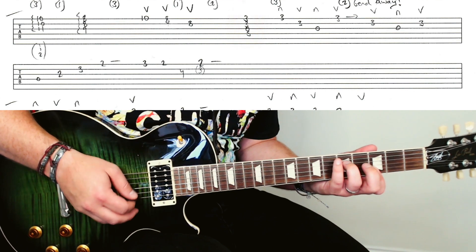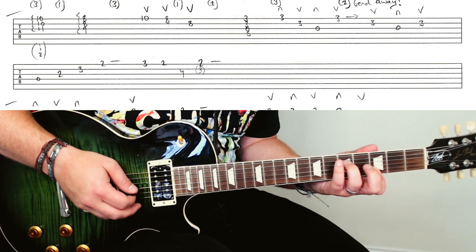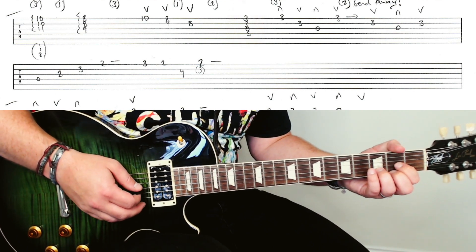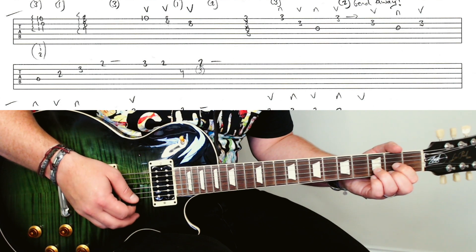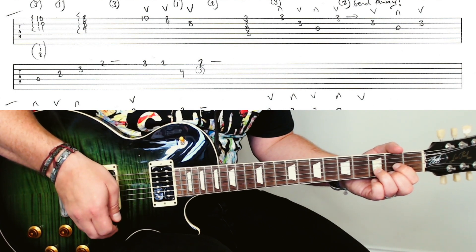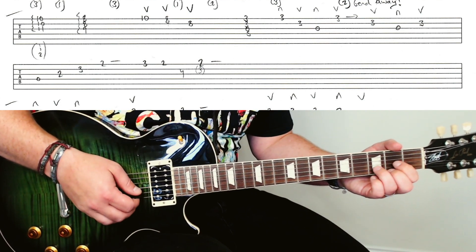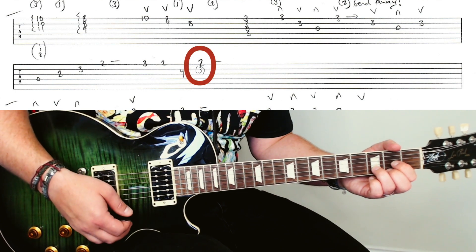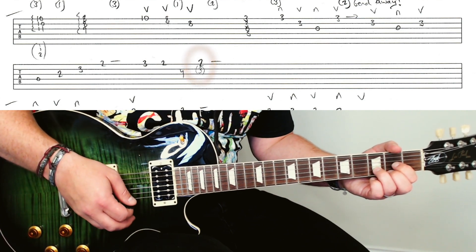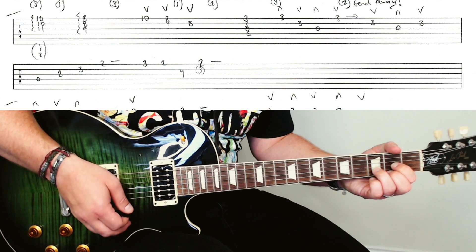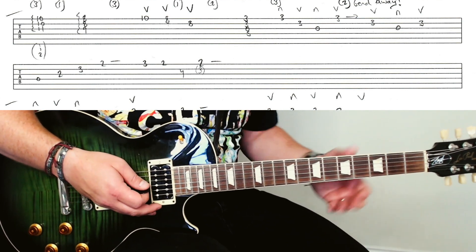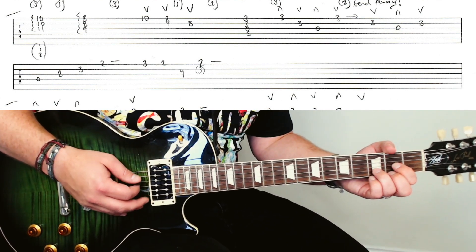And then this is the next pattern. And then you drop down to this D shape. You can also hit the 2nd note below that. If you so choose you can also pick alternately.